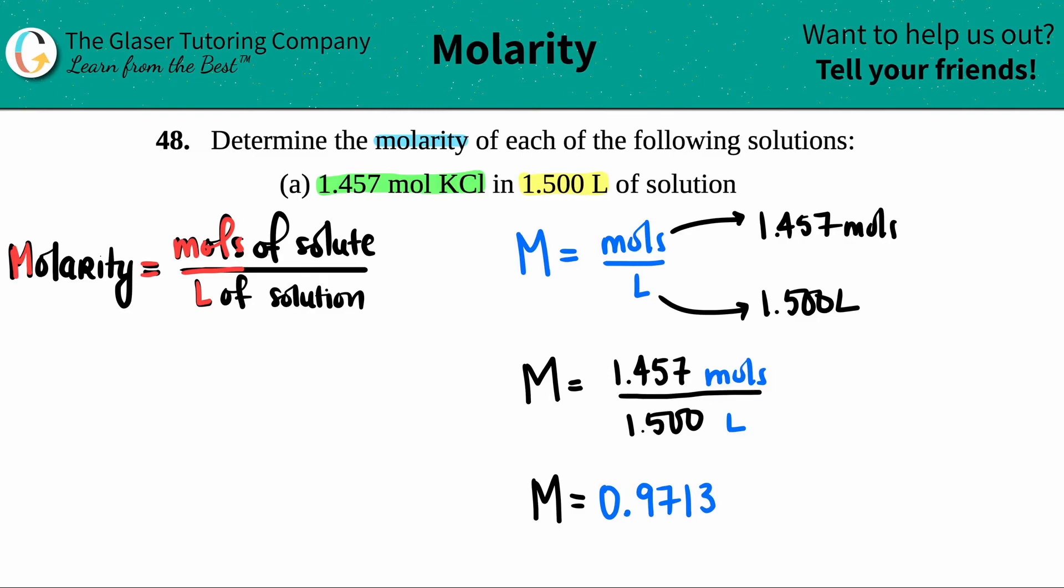Now you can do a couple of different units for molarity. Capital M is a molarity unit, so I can say that, but I also can go back to what the units were in the problem—it's just moles over liters. Since these are not the same unit, they do not cancel out, so I have to leave them. In this case, it would be 0.9713 moles per liter.